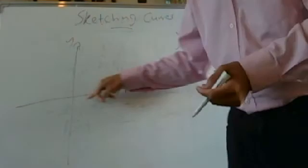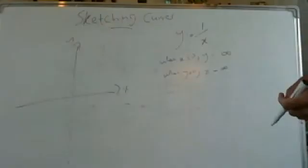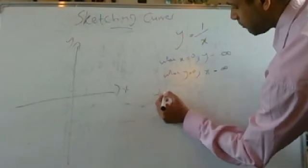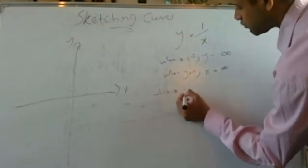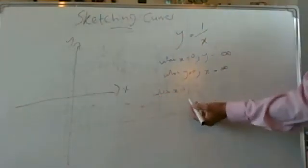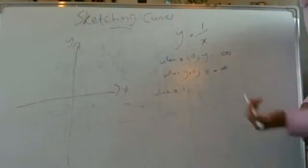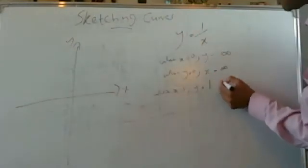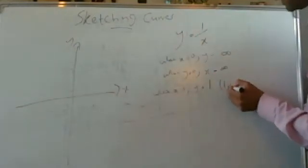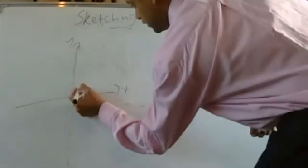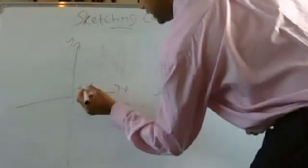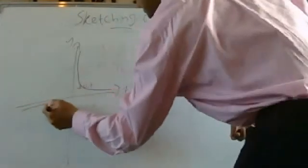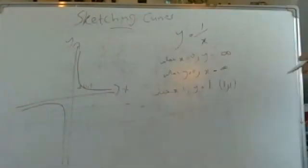Just to confirm where the graph is going, let's substitute x equals 1: y equals 1 over 1 equals 1. So the graph passes through (1, 1). The graph goes like that in the first quadrant, and reflects on the other side. That is the 1 over x graph.